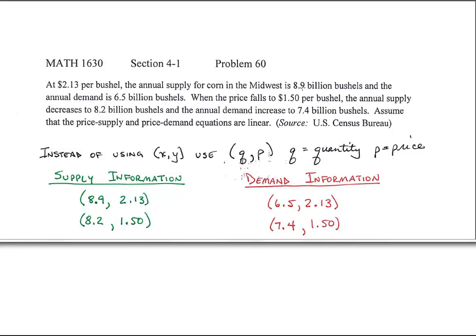At 8.9 billion bushels, my supply is at $2.13. But my demand, on the other hand, remember at $2.13 is 6.5. So I did the same thing with respect to when the price falls. So remember, it's quantity and then price.